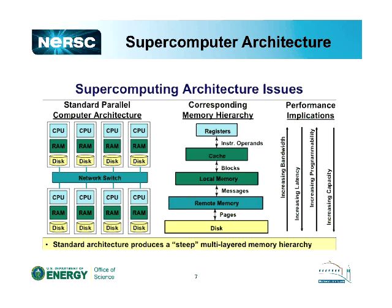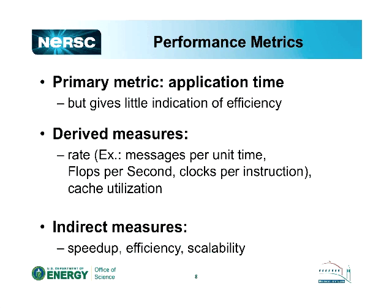Both John Shalf and Richard talked about computer architecture, so I won't go into this very much. The key issues we'll be considering are that the global computer architecture consists of individual compute units tied together via some network mechanism. Within one of these units, we have an increasingly deep memory hierarchy — this is really where performance is affected most on a single-processor basis. It's the interconnect that affects performance on a global basis, and we'll have methods of probing both areas with the tools.